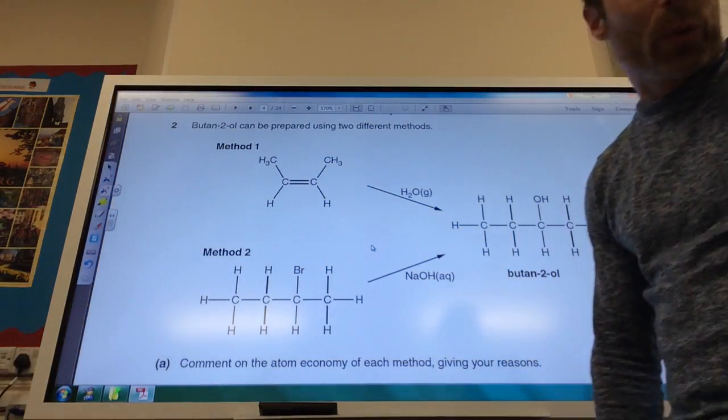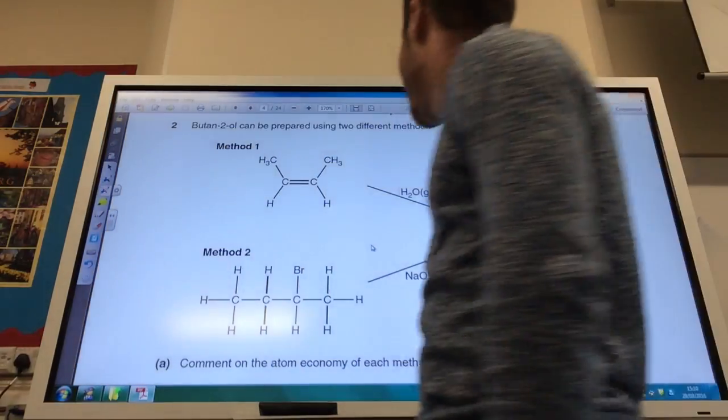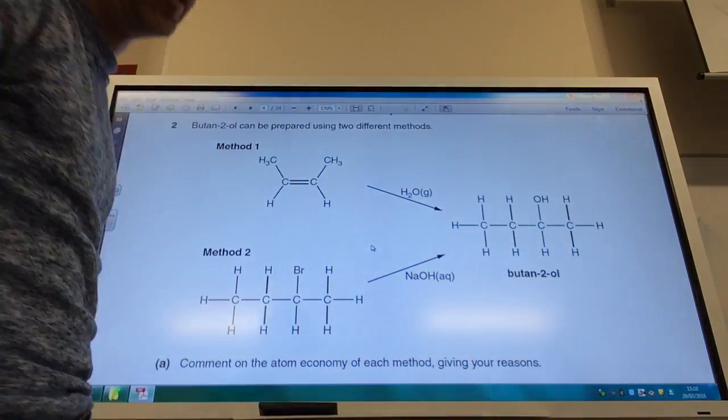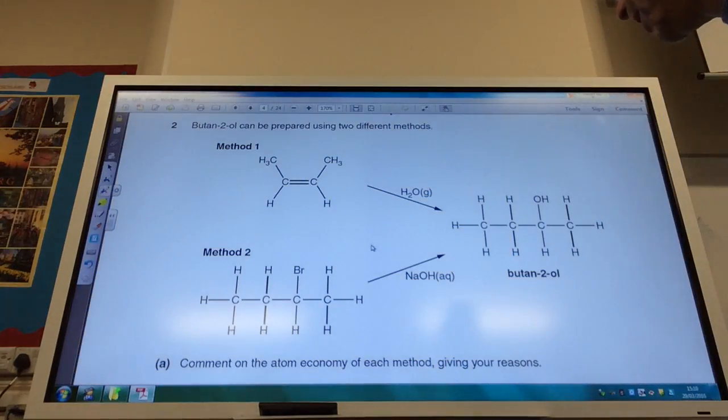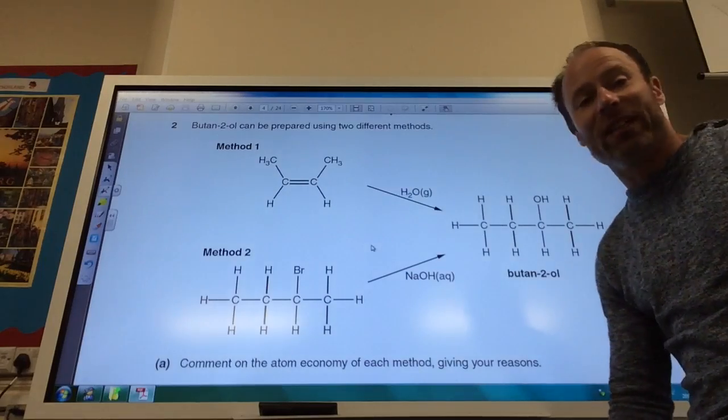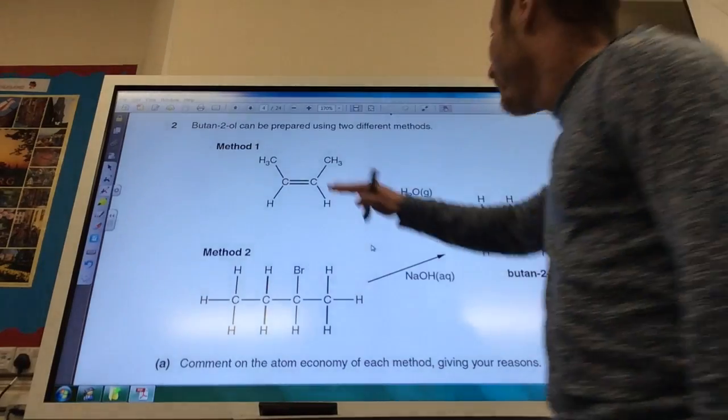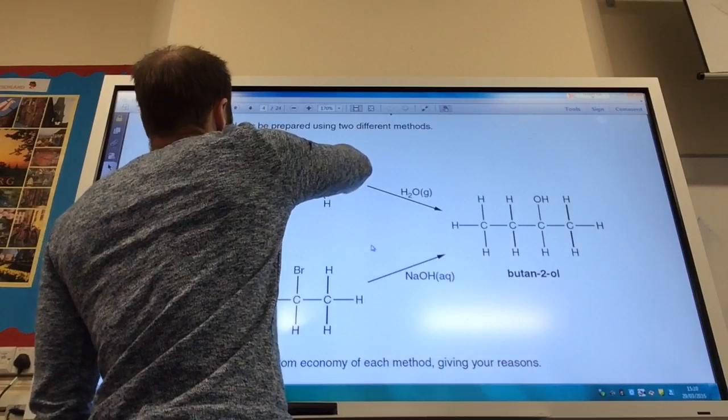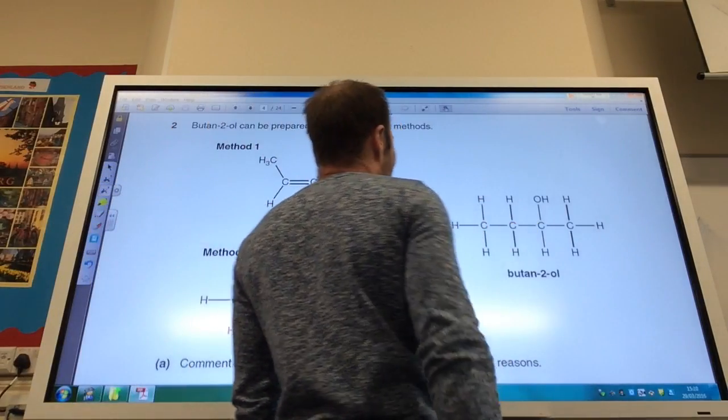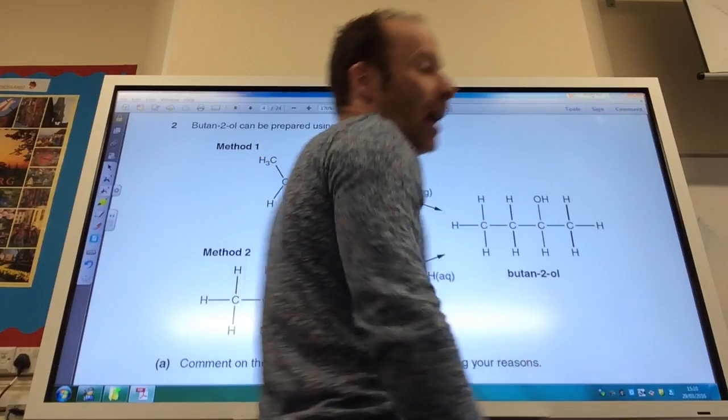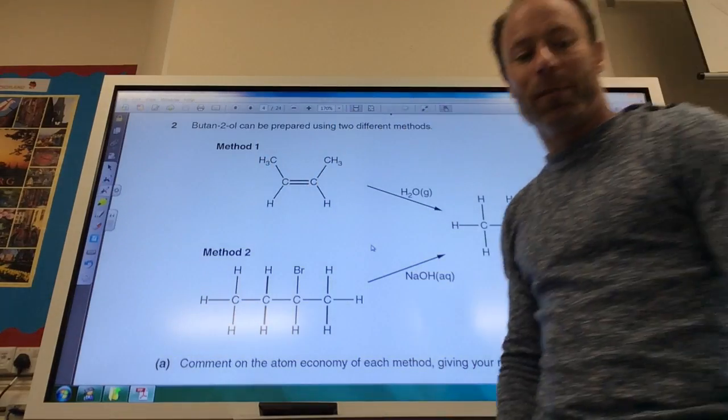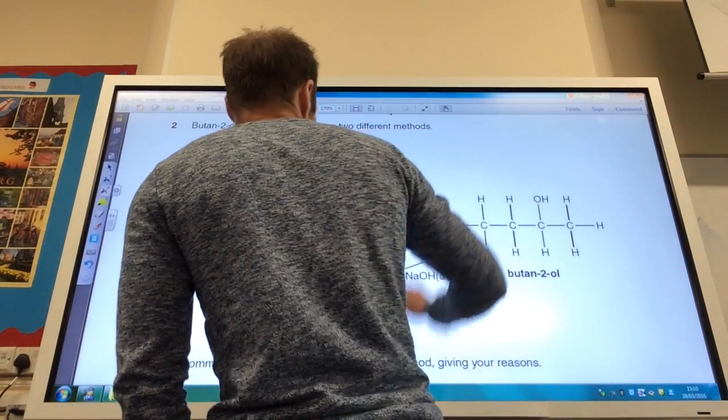Okay, so we now move on to question two. Butan-2-ol can be prepared using these two different methods. It wants me to comment on the atom economy of each method, giving my reasons. So let's have a look. Method one, I take my alkene and I make my alcohol. This is 100% atom economy. It's an addition reaction, so 100% atom economy.